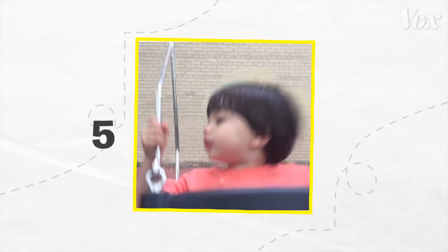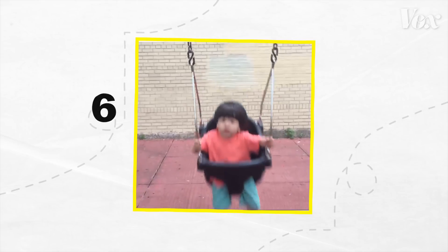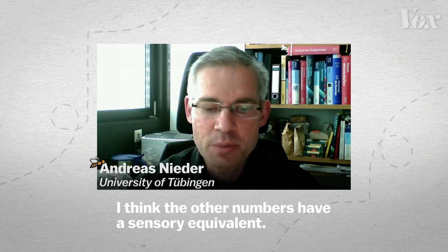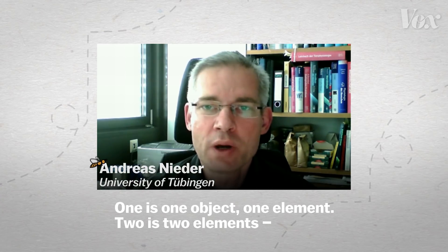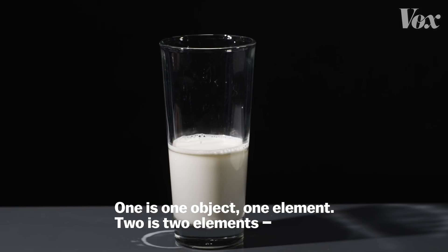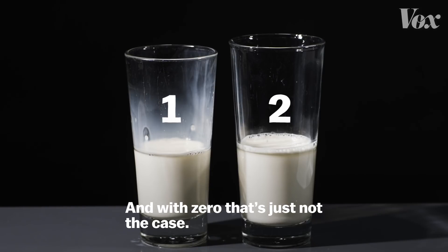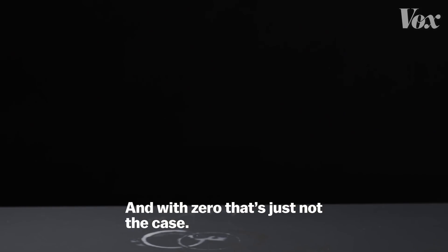Children understand the natural counting numbers long before they understand the number zero. I think the other numbers have a sensory equivalent. One is one object, one element. Two is two elements, however they look. But there is something to be counted. And with zero, that's just not the case.